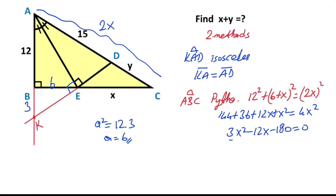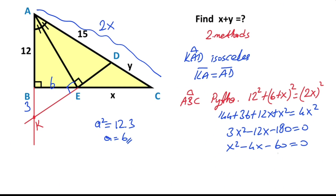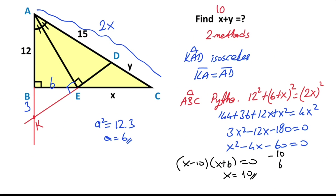If we divide both sides of the equation by 3, we get x squared minus 4x minus 60 equals 0. We know that minus 60 equals minus 10 times 6. So (x minus 10)(x plus 6) equals 0. That means x equals 10 units.